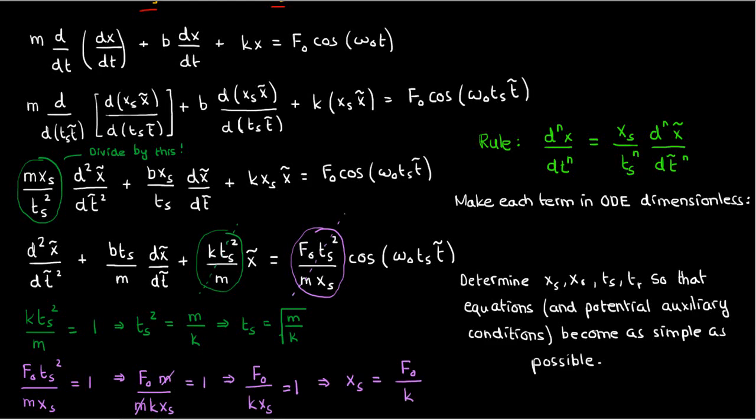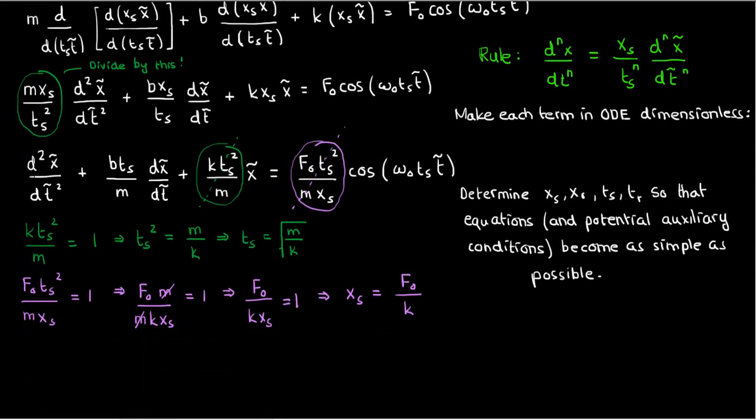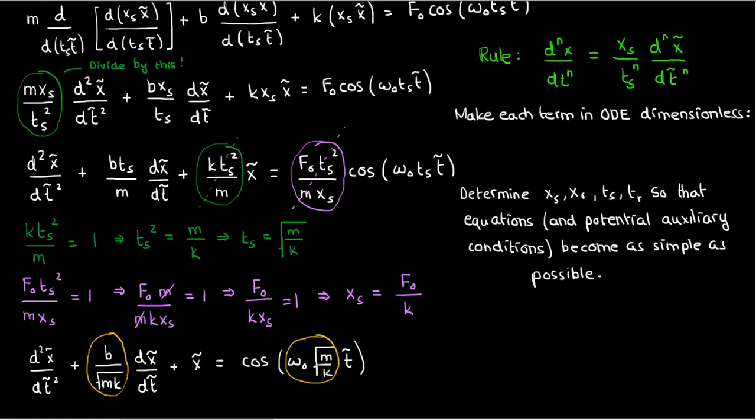We've cancelled out two lumps of constants, but there's still two remaining with the tₛ. So what we do next is plug in our tₛ = √(m/k), and this is what our equation will become: d²x̃/dt̃² + (b/√(mk))·dx̃/dt̃ + x̃ = cos(ω₀√(m/k)·t̃).